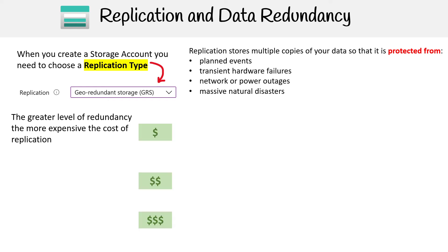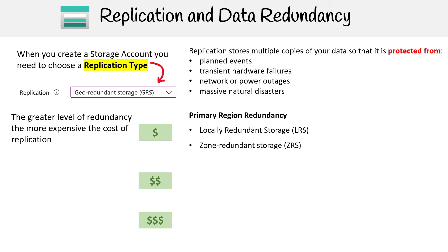Talking about costs, we can break it down into three categories, and each of these categories has two types of replication. We'll deep dive into all of them in the upcoming slides. For the first part, we have primary region redundancy: locally redundant storage (LRS) and zone redundant storage (ZRS). Locally redundant storage is the most cost-effective tier — that's the one I usually go for, especially when using development accounts. The use case for this tier is generally disaster recovery and failovers.